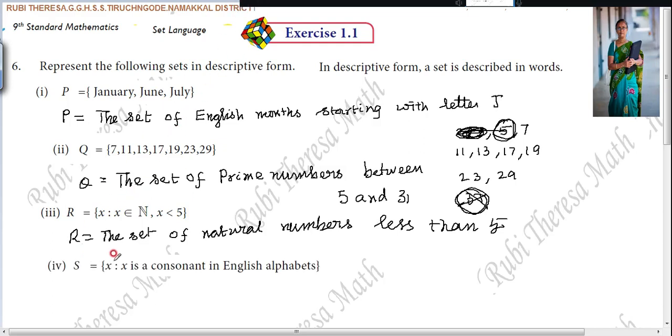S equals X such that X is a consonant in English alphabet. Set builder form. You are going to write it in descriptive form. As usual, you got to write. This is very easy, isn't it? The set of what? English consonants. You got to add s.